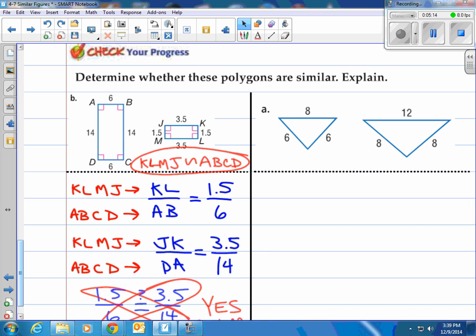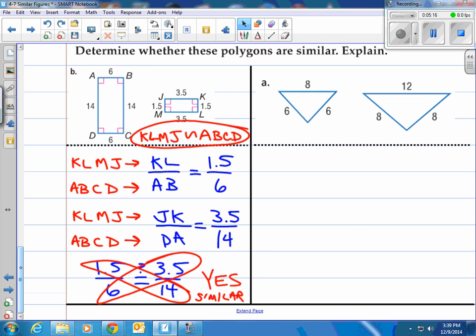So let's take a look at what I've done here. 1.5 over 6 and 3.5 over 14, are those the same? Well, just cross multiply. When you do, you actually get the same value. And the value of that would be 21. Yes, they are similar. And you'll notice up at the top there, I said KLMJ is similar to ABCD.